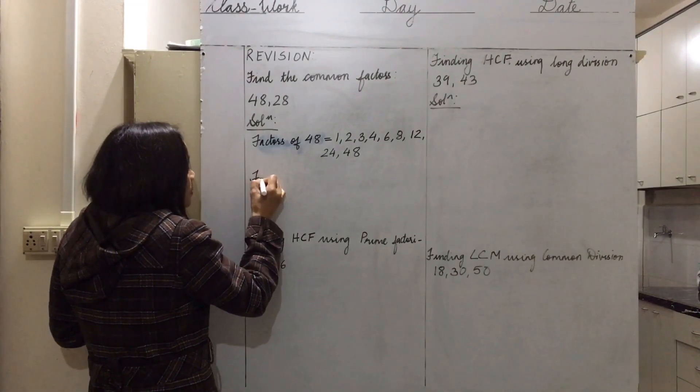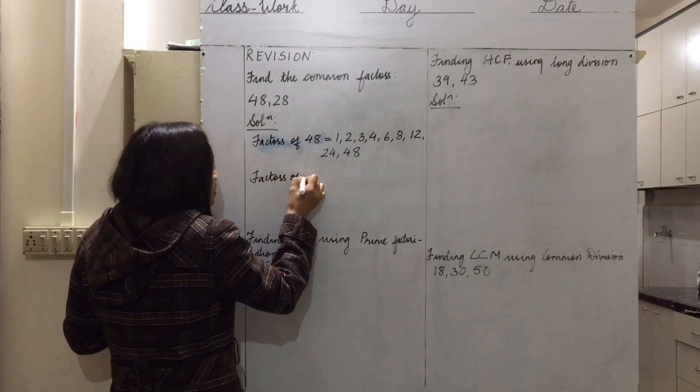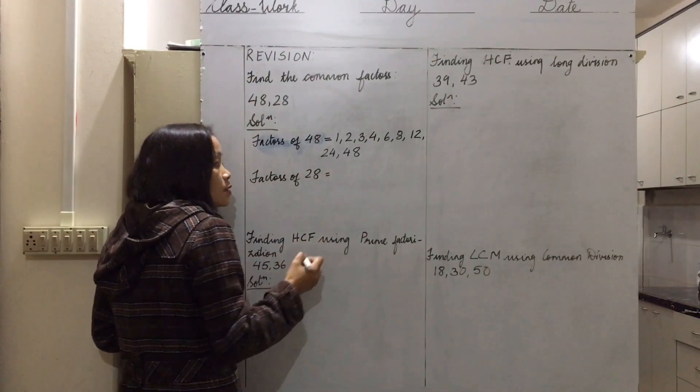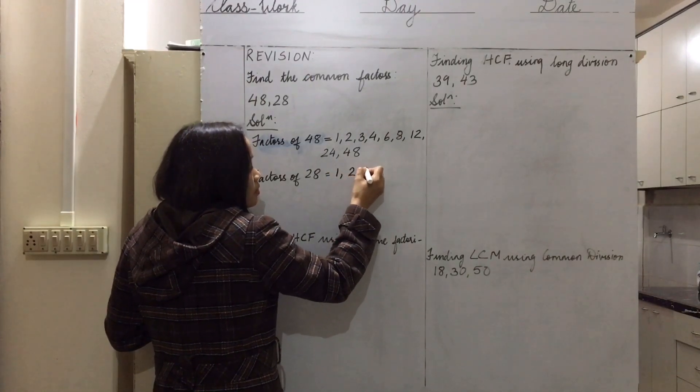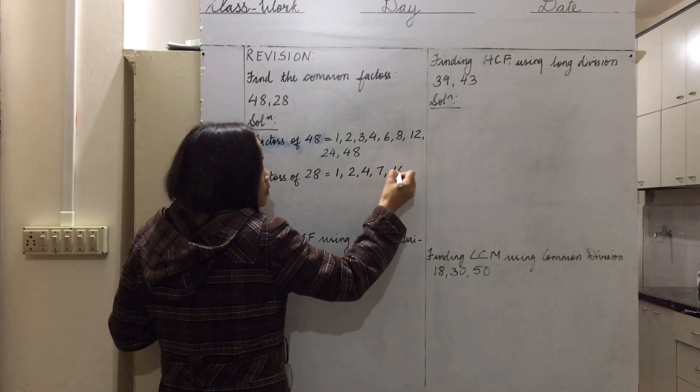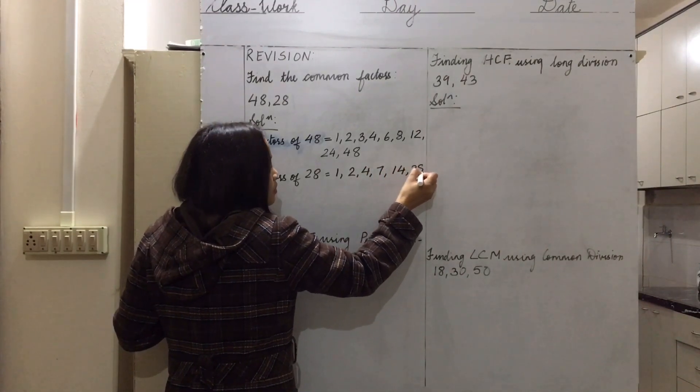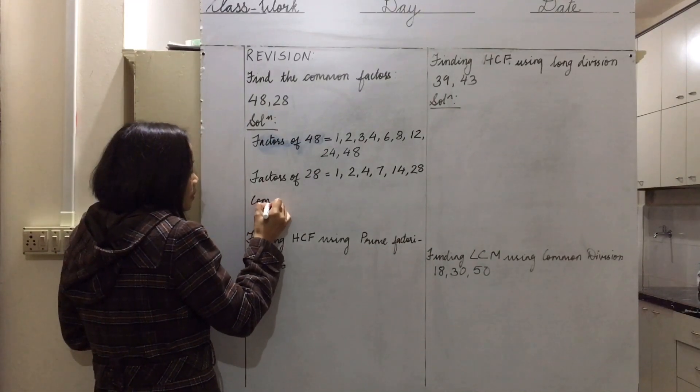Next we will be listing out the factors of 28. What are the numbers that can divide 28? One, two, four, seven, what else? Fourteen and 28. So from this we will be picking out the common factors.